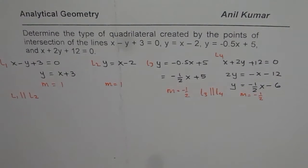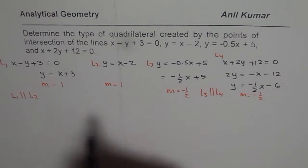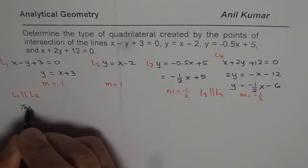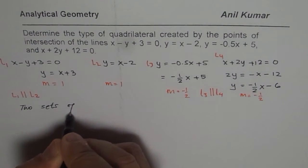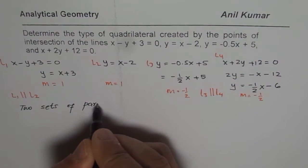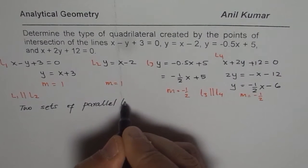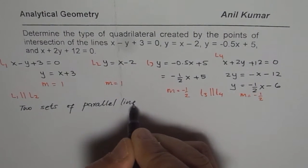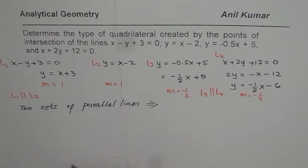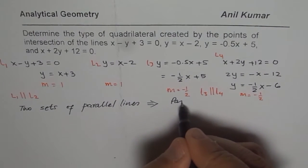So these four lines definitely form a parallelogram, correct? So since we have two sets of parallel lines, that should result in what? What type of quadrilateral? So it is a parallelogram.